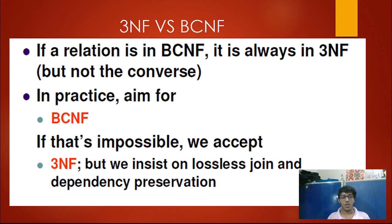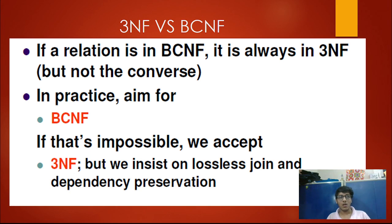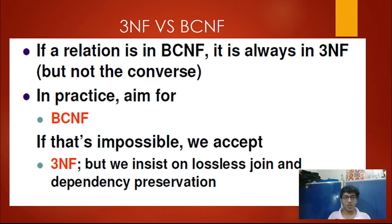Comparing 3NF versus BCNF: BCNF is of higher priority than 3NF. If a relation is in BCNF, it will always be in 3NF, but the converse is not true — a table in 3NF is not necessarily in BCNF. In modern practice, major organizations aim for BCNF, 3NF, 4NF, and higher forms because this reduces a lot of redundancy from their data. The number of tables increases, but each table completely determines a particular set of attributes.